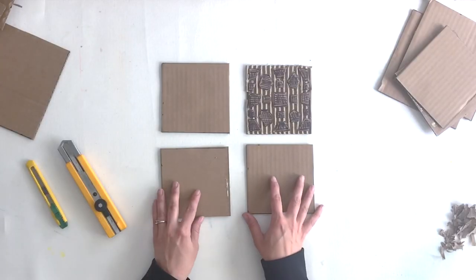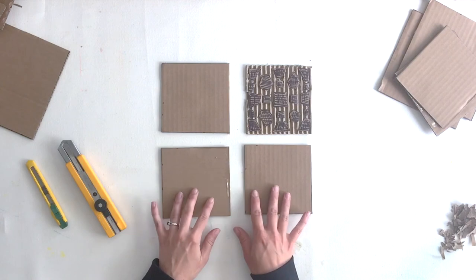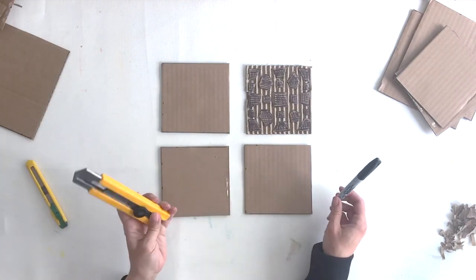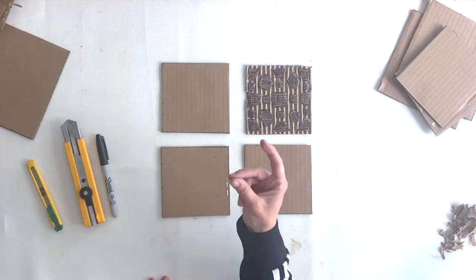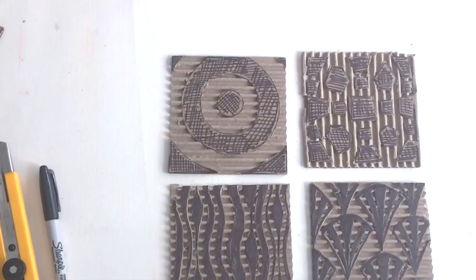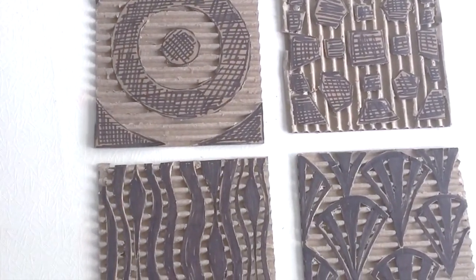I'm going to try out four different designs, so I'll repeat the process three more times. I'll use Sharpie to draw, my knife to cut the top layer away, and the magic of television to speed through the process. And here are my four cardboard blocks ready to print.